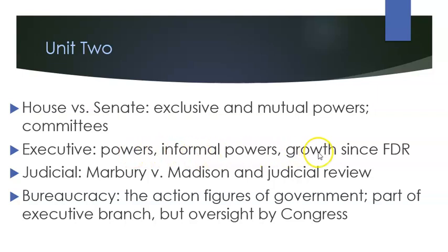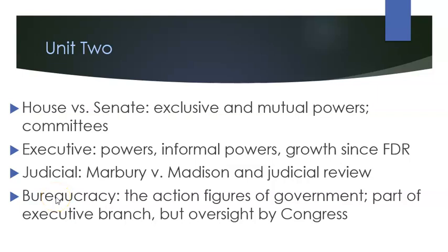Be aware of the differences between formal and informal powers. The executive branch has grown significantly because of FDR — a big game-changer in which the power and muscle of the national government and the president grew quite significantly. When we get into Article 3 with the judicial branch, Marbury v. Madison is the Supreme Court case to know because it establishes judicial review, giving it the power to declare any law or act of Congress unconstitutional. Without this power, the judicial branch would not be very strong at all. The bureaucracy — technically falling under the executive branch — are the action figures of government. Congress can pass all the laws they want, but you need somebody to execute the law.